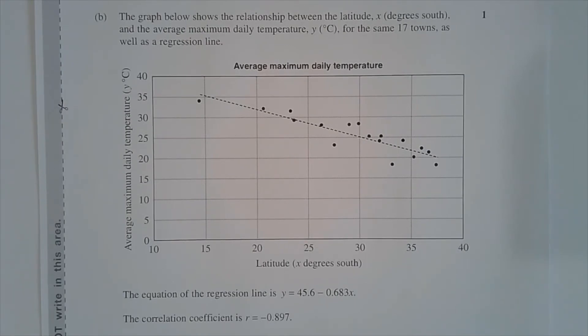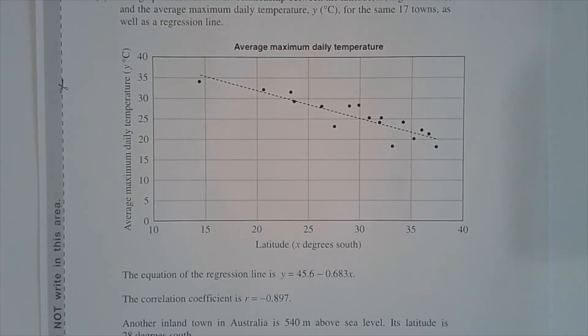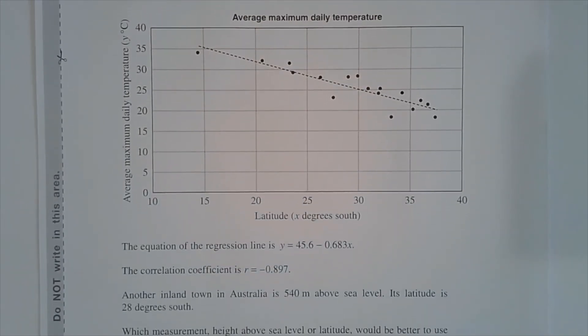The equation of the regression line is y equals 45.6 minus 0.683x. The correlation coefficient is r equals negative 0.897.